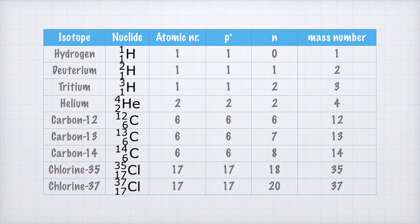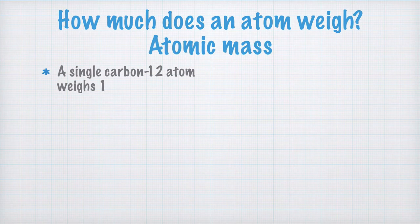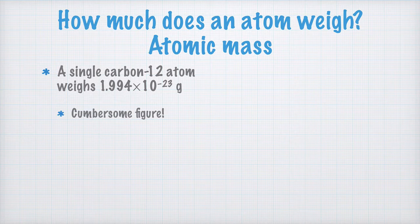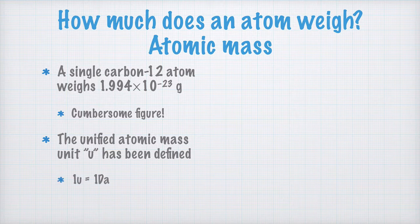In the last part of this video, we'll look at the atomic mass — that is, how much a single atom weighs. If we look at a single carbon-12 atom, its mass is 1.994 times 10 to the minus 23 grams, a terribly cumbersome figure. To make it easier to calculate the masses of atoms and molecules, chemists and physicists have devised a completely original mass unit: the unified mass unit U. Sometimes it is written AMU for atomic mass unit, but it's more convenient to just write U.